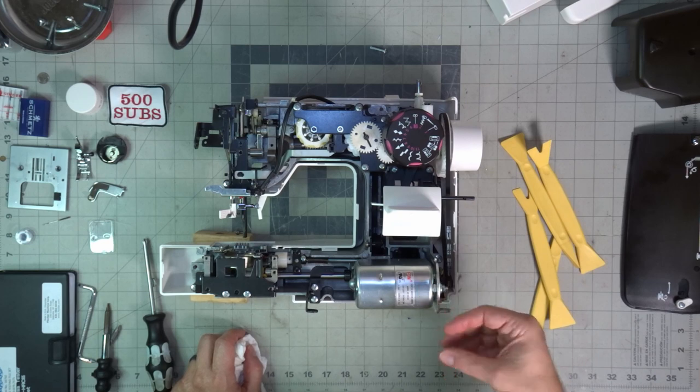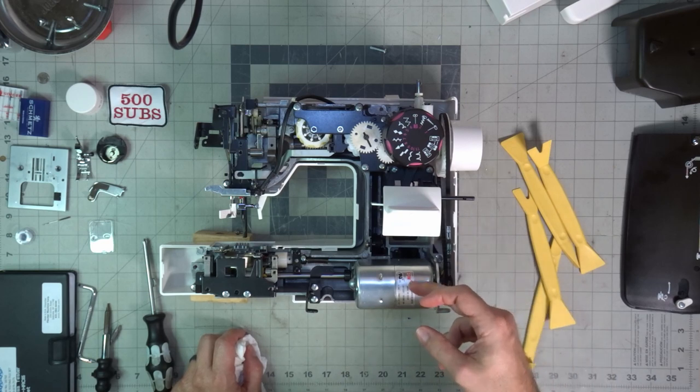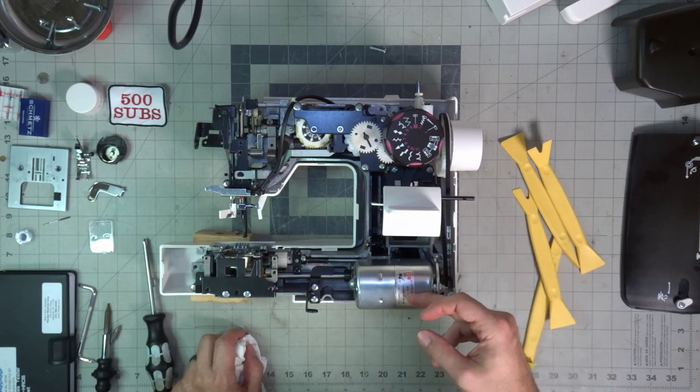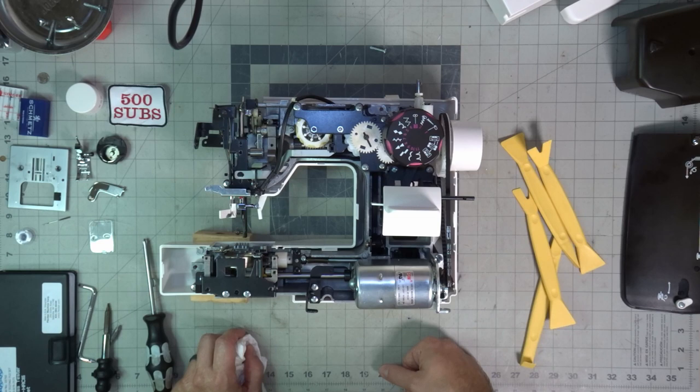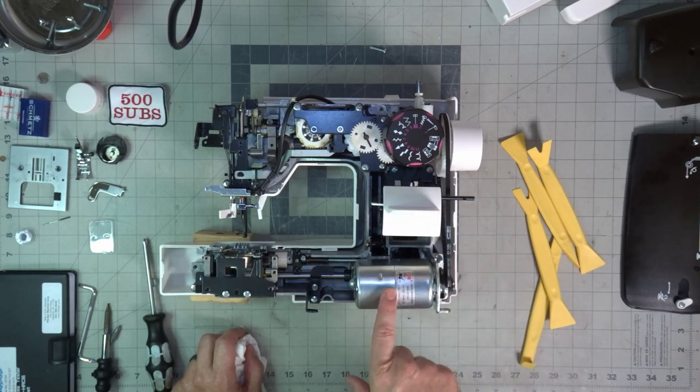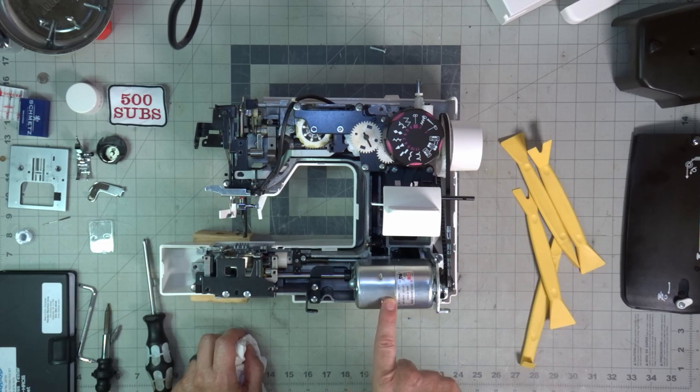Looking at the sewing machine motor, this is a 120 volt, 50 or 60 hertz motor. It's a 50 watt motor. How many watts were we running at? Yeah, we'll see a little bit later on. So, 0.46 amps and 5,000 RPM.